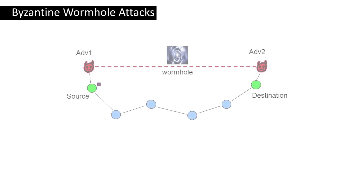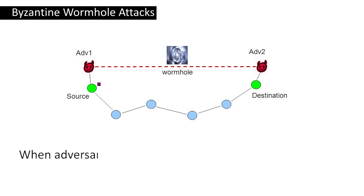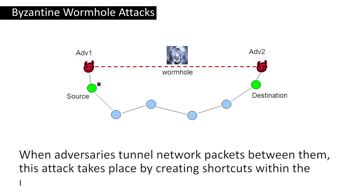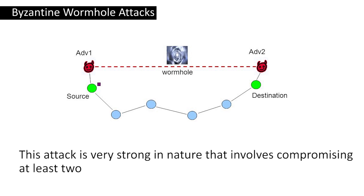Next is the Byzantine wormhole attack. This attack takes place by compromising multiple nodes in the network. When adversaries tunnel network packets between them, the attack creates shortcuts within the network. It is very strong in nature and involves compromising at least two nodes.